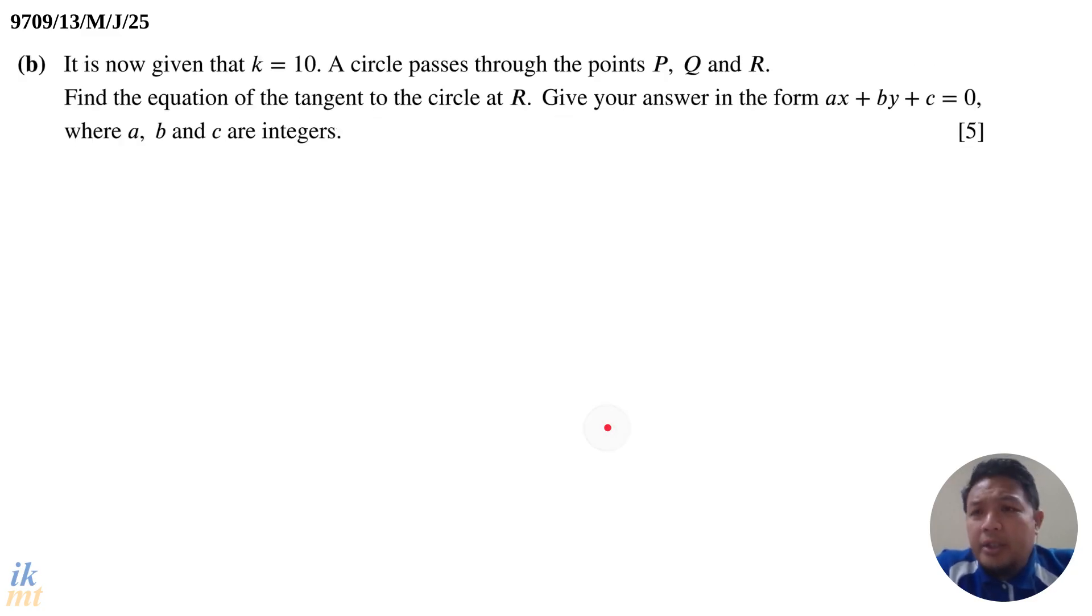Part B. It is now given that k equals 10. A circle passes through the points P, Q and R. Find the equation of the tangent to the circle at R. Give the answer in the form ax + by + c = 0 where a, b and c are integers. This is a 5 mark question. Let's look at the situation first. Make sure that we no longer use the value k. Don't use k anymore. Some students forget this and they keep using the k. K is now 10, so we'll replace k equals 10.